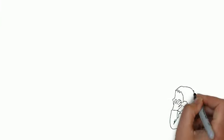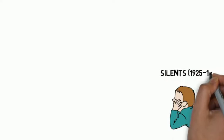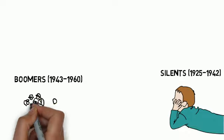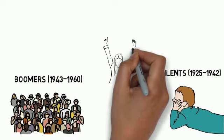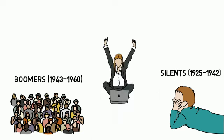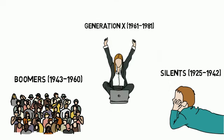Current generations on campus. The Silents, born 1925 to 1942, most are no longer working. Boomers, born 1943 to 1960, they are the parents of Millennials, faculty, and upper level administrators. Generation X, born from 1961 to 1981, they consist of a large percentage of faculty and staff.